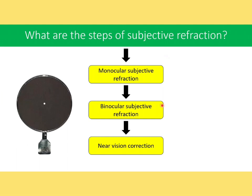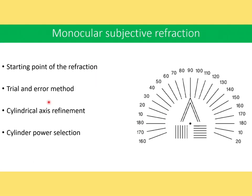There are basically three steps of subjective refraction: monocular subjective refraction, binocular subjective refraction, and near vision correction. Binocular subjective refraction is only done when both eyes have the same or nearly the same visual acuity. The pinhole is a very useful tool during refraction — if visual acuity improves with the pinhole, it indicates refractive error. If it doesn't improve, it may suggest amblyopia or similar conditions. If visual acuity reduces, it indicates macular or retinal pathology.